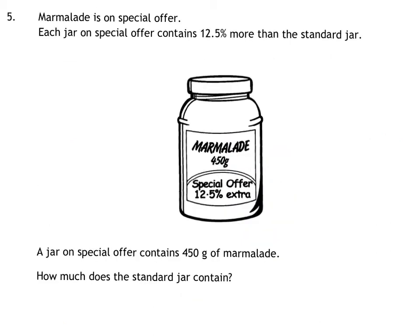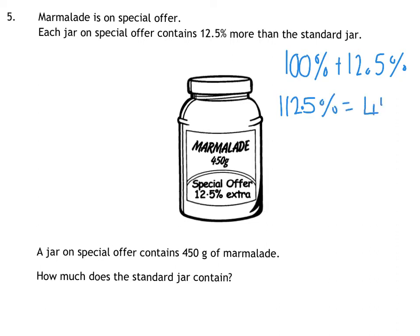Question 5. We have a jar of coffee with 12.5% extra free in it, which weighs 450 grams. We have to find the original jar. So at some point our original jar was 100% and they added in 12.5%, and they got that equal to 450 grams. So 100 plus 12.5 is 112.5%, which is equivalent to 450 grams. This is not just a case of find 12.5% and take it away — that is not National 5, so please don't ever do that.